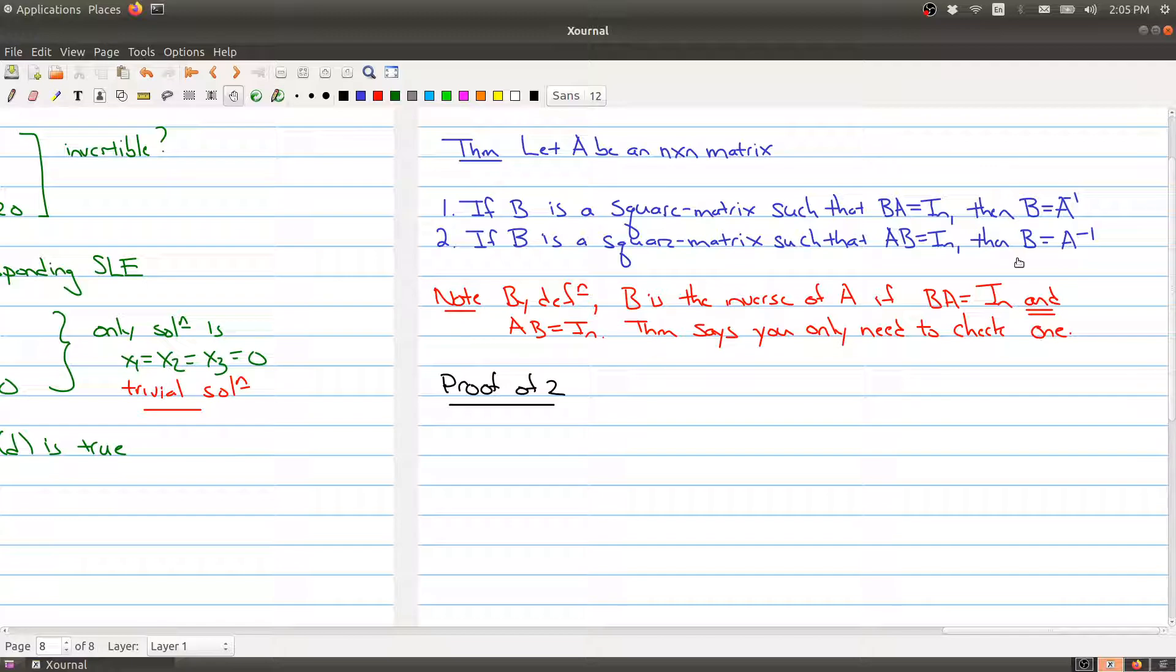Now you may be thinking, well yes, that's what it means to be the inverse. But you have to be careful, because by definition B is the inverse of A if when you multiply on both the left and the right hand side you get the identity. But what the theorem says is that no, you don't actually need to check both multiplication on both sides. If you can check that your matrix works on one side, it will automatically work on the other side as well.